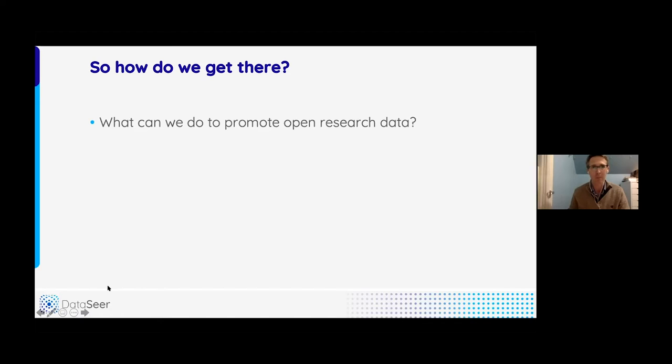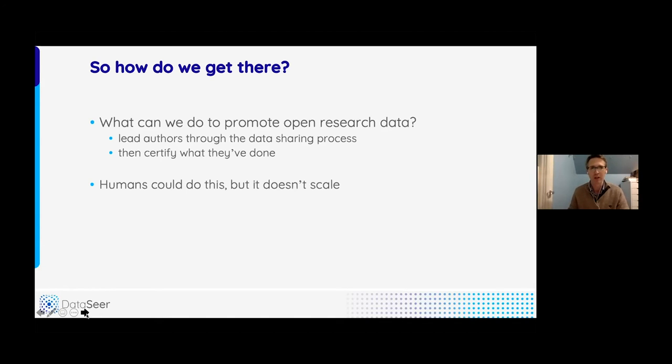And if we're going to boost people's trust in the literature, clearly that's what we need to do. So what can we do to promote research data? We need to do two things. First, we need to lead authors through the data sharing process. It is often far from clear what you need to do as a researcher, what datasets need to be shared, where they need to go, what format they should be in. And then at the end of the process, some stakeholder institution, a journal or a funder, needs to